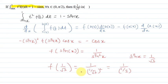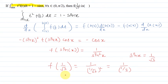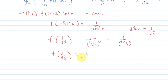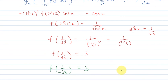So the value of f(1/√3) is 1 upon (1/3), which equals 3. The value of f(1/√3) is 3. I hope you understood the solution. Thank you.